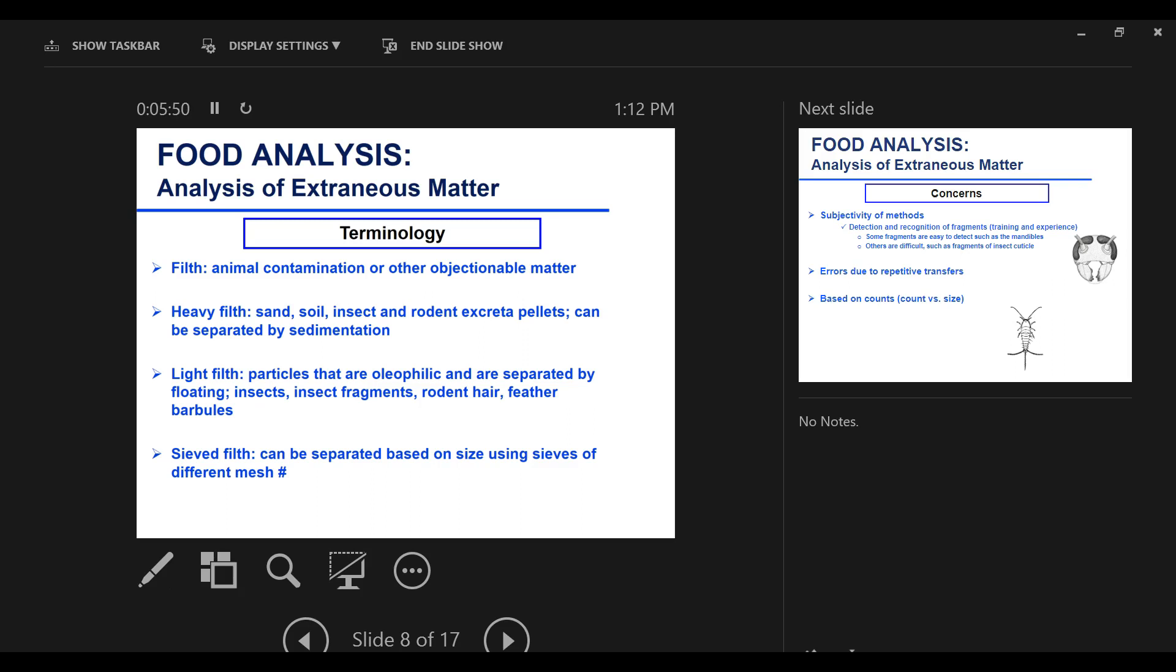Insect and rodent excreta, the pellets. They can be separated by sedimentation. The soil will be more dense, so they are separated by floating and sedimentation. Light silt will be small insects and fragmented insects, rodent hair, feather, mycelium. Seed fill - they are separated based on size, so that's why they call them seed fill.